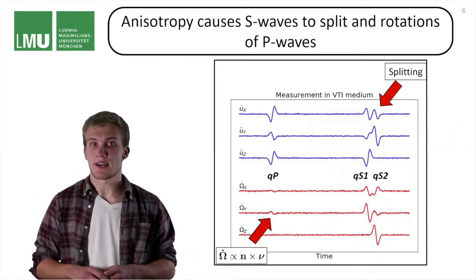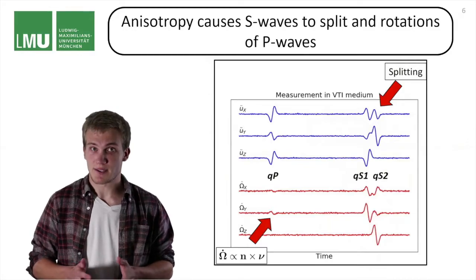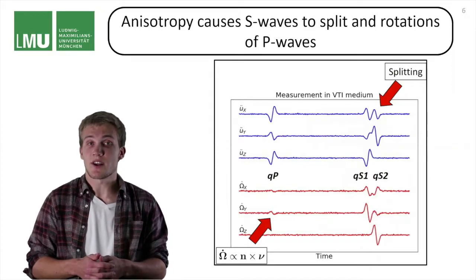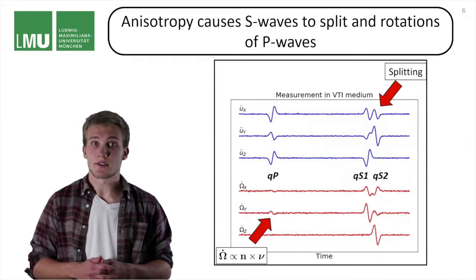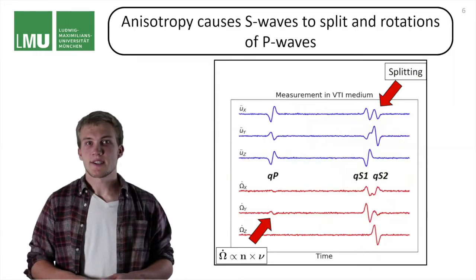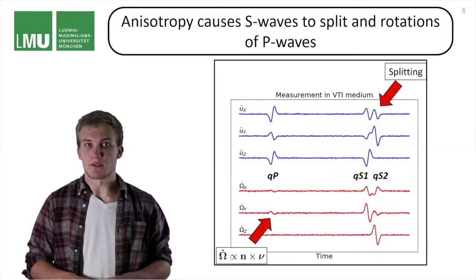The first one is that the shear waves are split. This is because differently polarized shear waves travel at different velocities, and therefore there are two arrivals in the measurement. Shear wave splitting is a quite well known phenomenon.